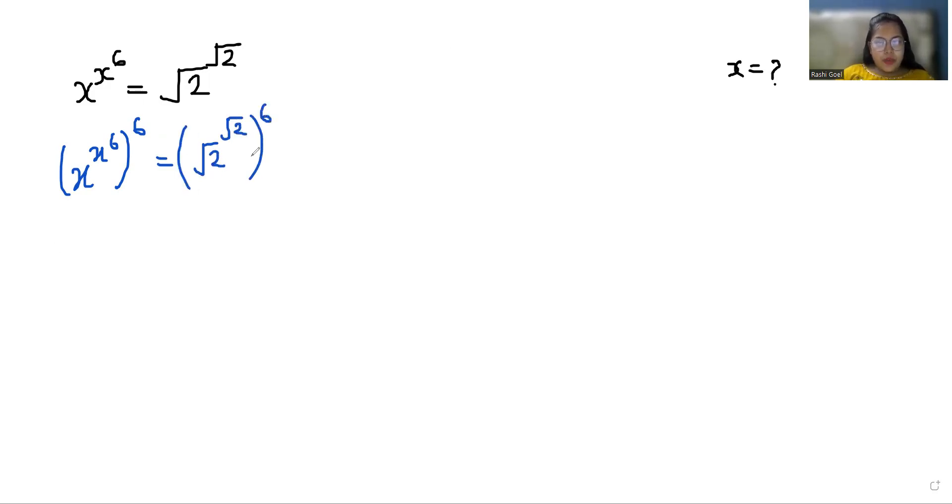Now exponent rule: (a^m)^n we can write it as a^(mn) or a^(nm). So we can write this as (x^6)^(x^6) equals (√2)^6 power √2, which is (√2)^(6√2).